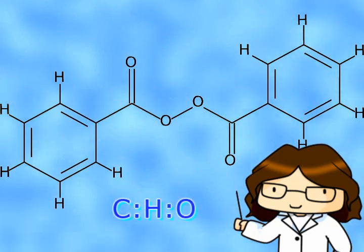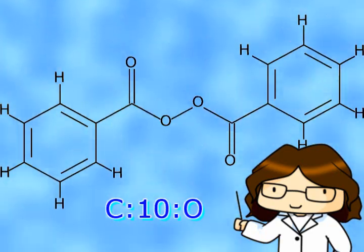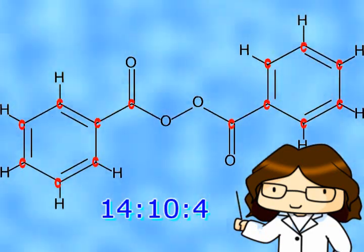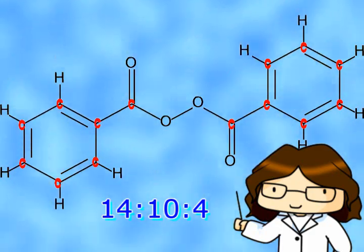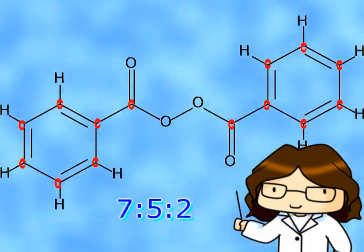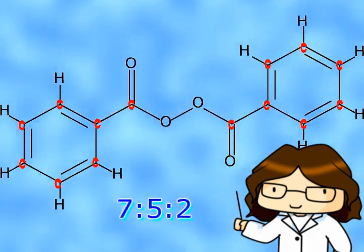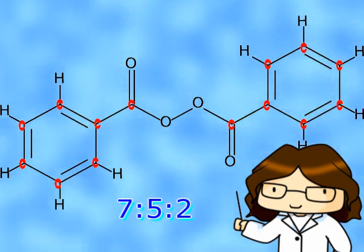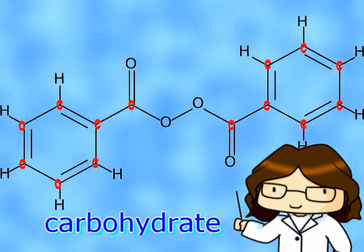This is the chemical structure for benzoyl peroxide. It contains 10 hydrogens, 14 carbons, and four oxygens. Its ratio simplified is 7:5:2. Because benzoyl peroxide only contains carbon, hydrogen, and oxygen, it's classified as a carbohydrate.